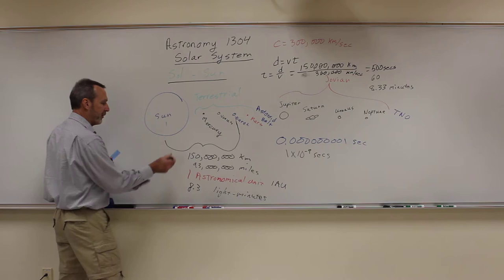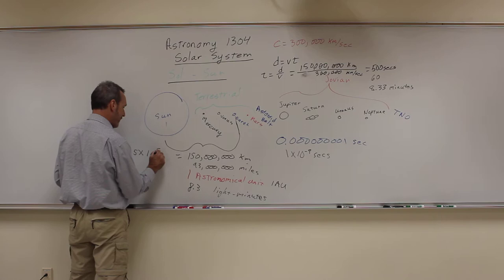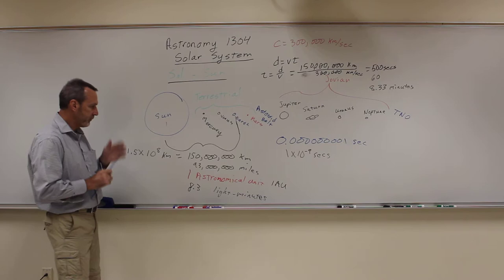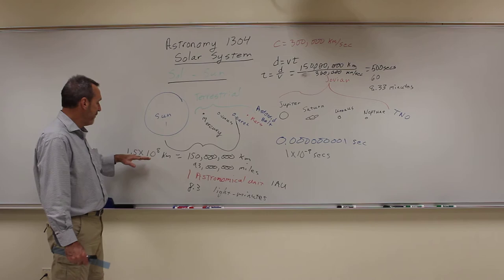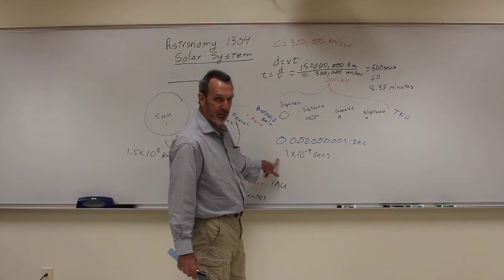So I would write 150 million kilometers as 1.5 times 10 to the, and I just count 1, 2, 3, 4, 5, 6, 7, 8 kilometers. That is the same as that. Now when you read your textbook or look online, most people write it like this because we don't want to write all those zeros. In astronomy, you get a lot of zeros. So it's much easier to do this. Remember this is a positive number, it's a very big number. Negative number is a very small number.